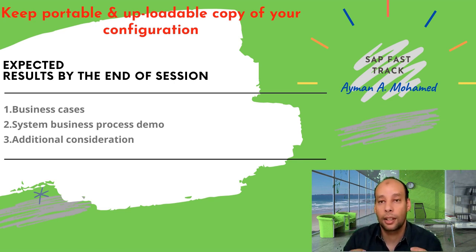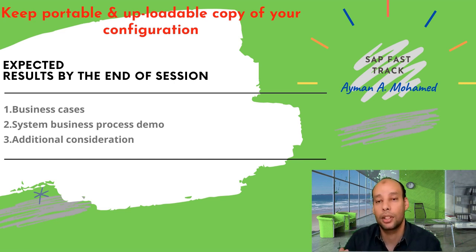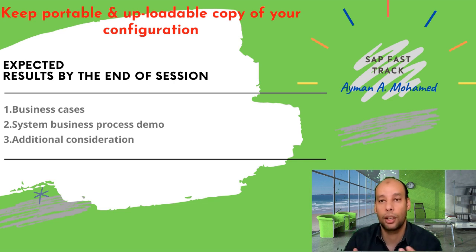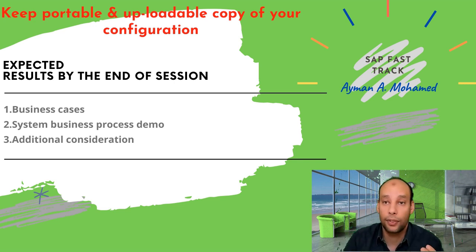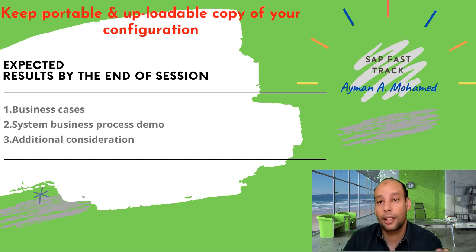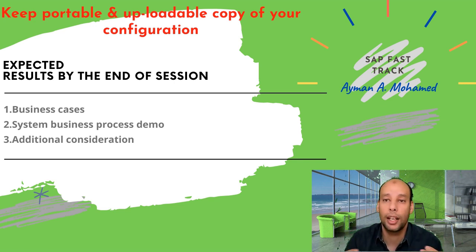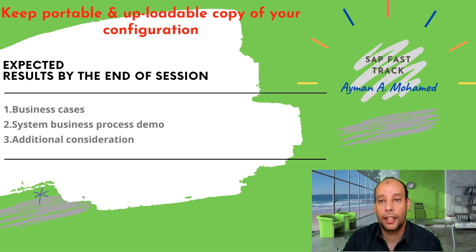The business case behind this is that in many rollouts you have totally different server and environment. In this case, if there is no RFC connection, we can download your configuration in a text file and upload it in a totally different system. Another case is that we may need a backup for a specific configuration, and this function allows me to take this backup and apply it later on if any issue occurs.